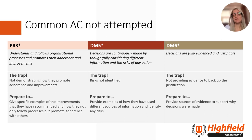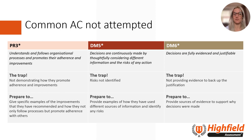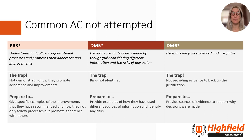Let's look at some of the common assessment criteria not attempted. PR3 — understands and follows organisational processes and promotes their adherence and improvements. The trap learners fall into here is not demonstrating how they promote adherence and improvements; they should prepare to give examples of improvements they have recommended and how they not only follow processes but promote adherence with others. DM5 — decisions are continuously made by thoughtfully considering different information and the risks of any action. The trap here is that learners aren't identifying the risks, so they should prepare to provide examples of how they used different sources of information and identified any risks. DM6 — decisions are fully evidenced and justifiable. The trap here is not providing evidence to back up the justification; learners should prepare to provide sources of evidence to support why decisions were made.